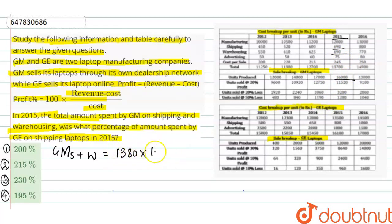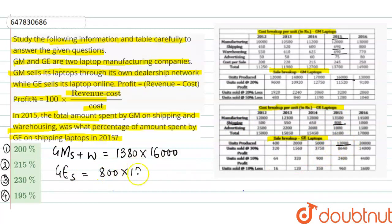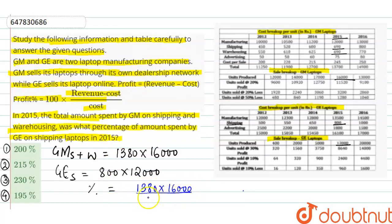So, 1380 into 16,000 — this is our amount spent in 2015 by GM on laptops. For GE, the shipping cost is 800 per unit and units are 12,000. So GE's shipping amount is 800 into 12,000.